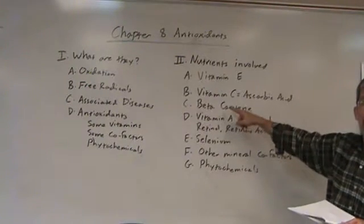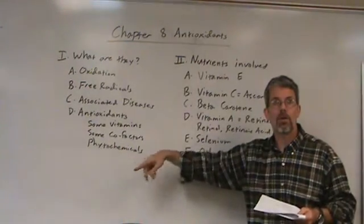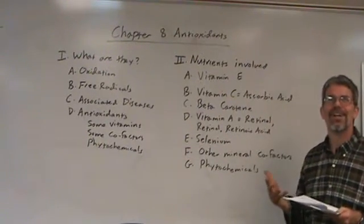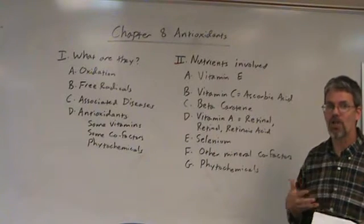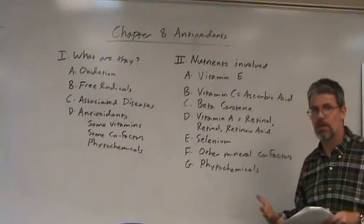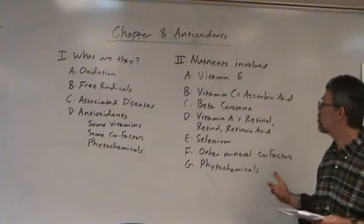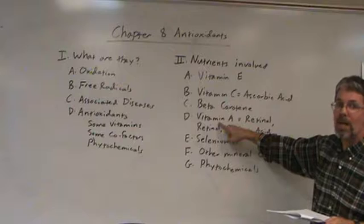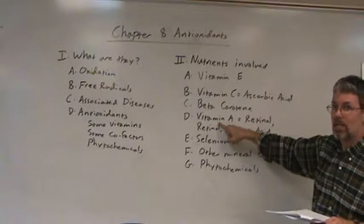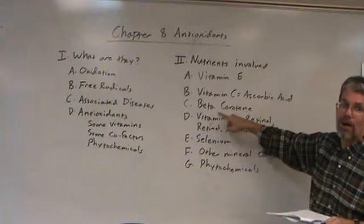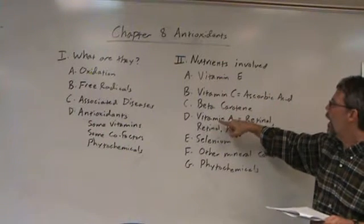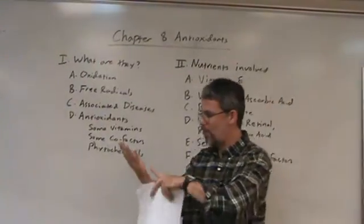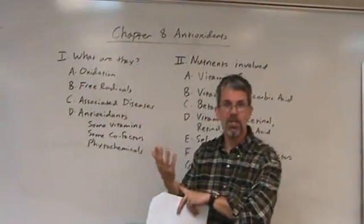Beta-carotene is one of those carotenoid pigments — it's actually a type of phytochemical. It gives colorful fruits and vegetables their bold colors, such as orange things, dark green things, and red and yellow vegetables. It's an antioxidant but also a precursor to vitamin A, meaning we make vitamin A from it when we eat beta-carotene. There is no RDA set for beta-carotene other than through vitamin A, and getting too much only produces the characteristic side effect of a yellowish or orange tinge beneath the skin.